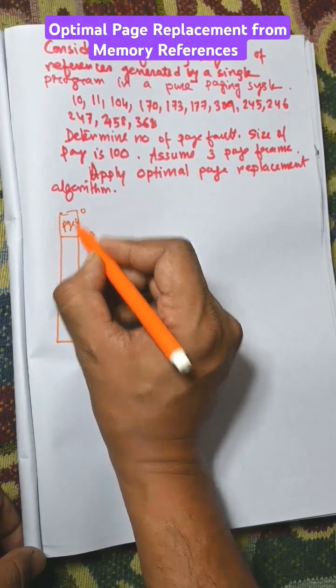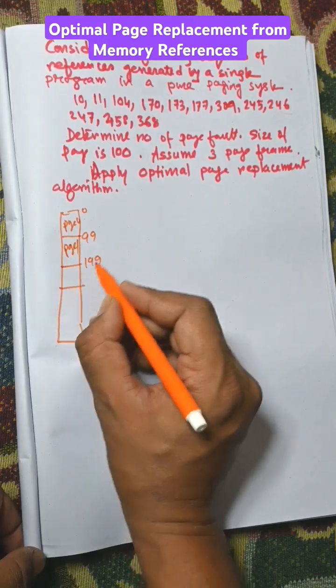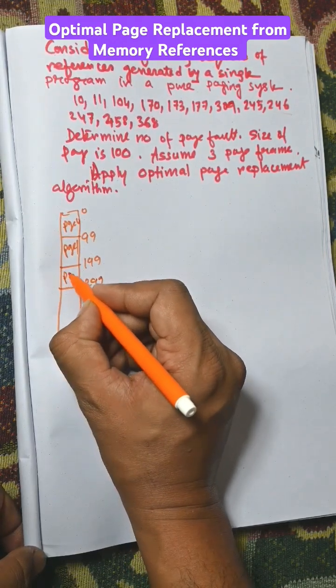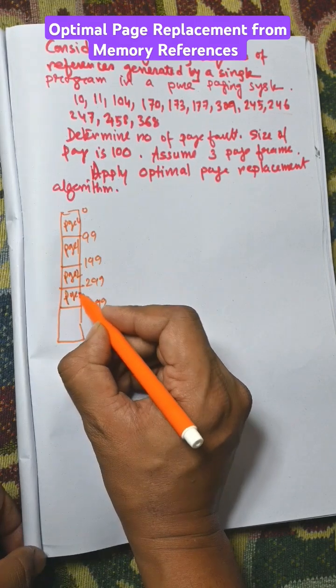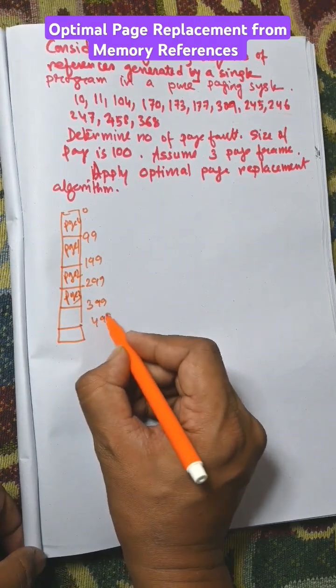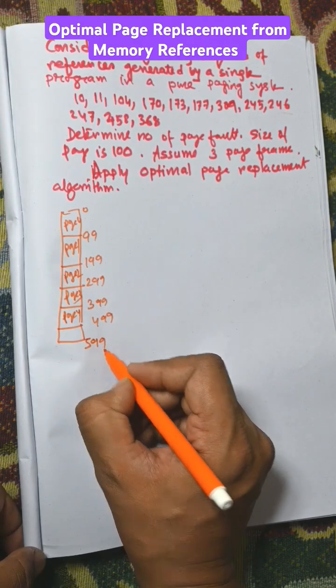199 to 299 page 2, 299 to 399 page 3, 399 to 499 page 4, 499 to 599 page 5.